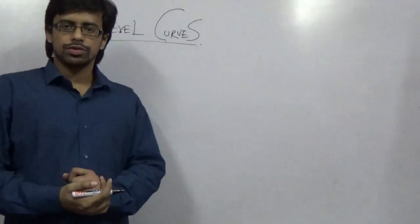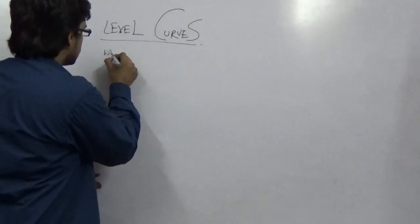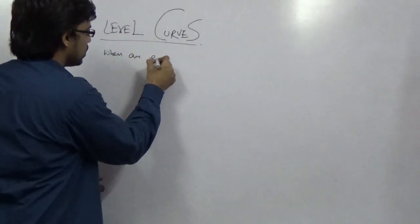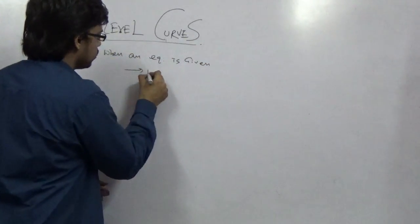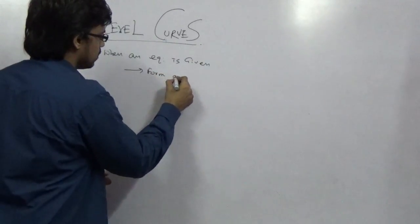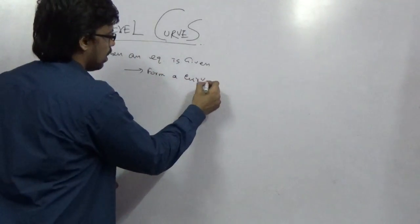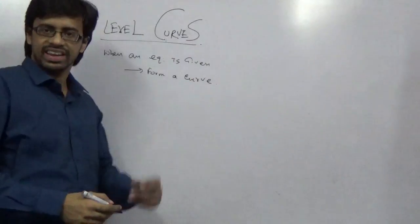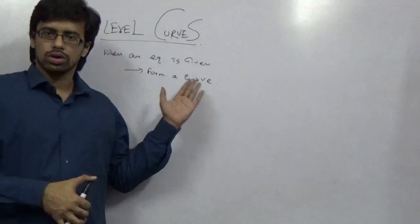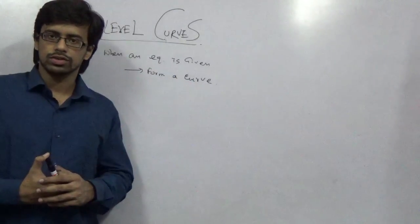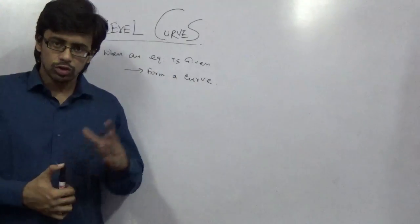What is a level curve? Remember when an equation is given and you have to form a curve which satisfies that equation. So representing a mathematical equation with respect to a curve on a two-dimensional axis is called a level curve.